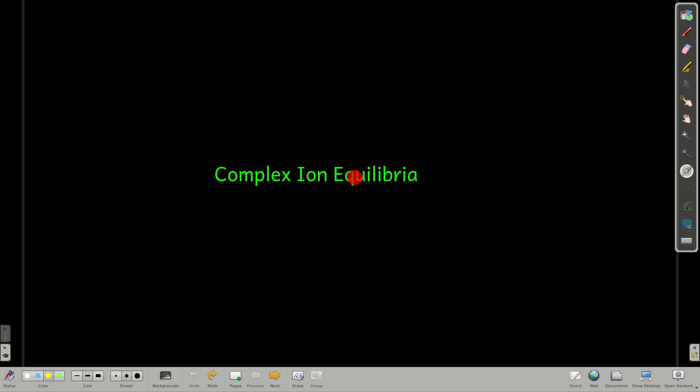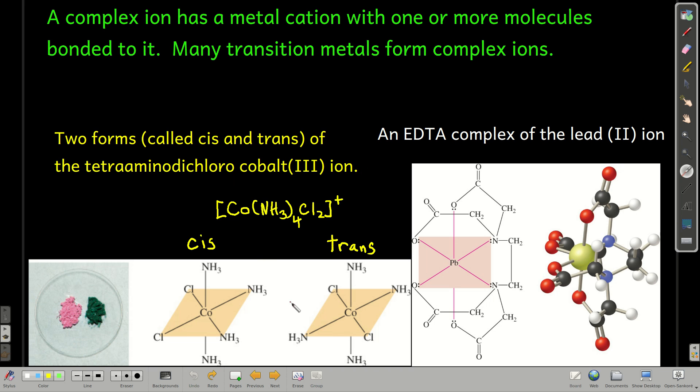We're going to talk about complex ions and their equilibria. So first, what is a complex ion? Well, it has a metal cation at the center with one or more molecules bonded to it.